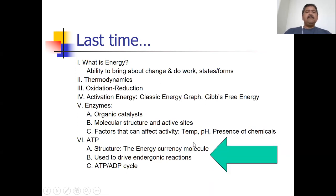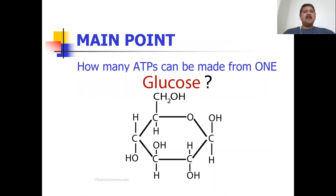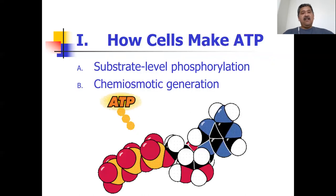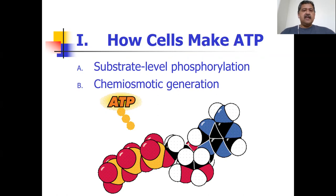Then we looked at ATP as well. Let me remind you about ATP specifically, because that is important to understand today's topic. How many ATPs can be made from one glucose? We'll see it's an awful lot. Cells make ATP through two different mechanisms: substrate level phosphorylation, and chemiosmotic generation of ATP through a membrane.